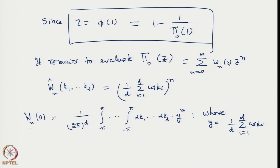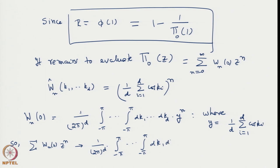With this, we can show that Σ W_n(0) z^n becomes (1/2π)^d times the d-fold integral over dk_1...dk_d, with the sum taken inside the integrals: Σ from n=0 to infinity of (yz)^n.